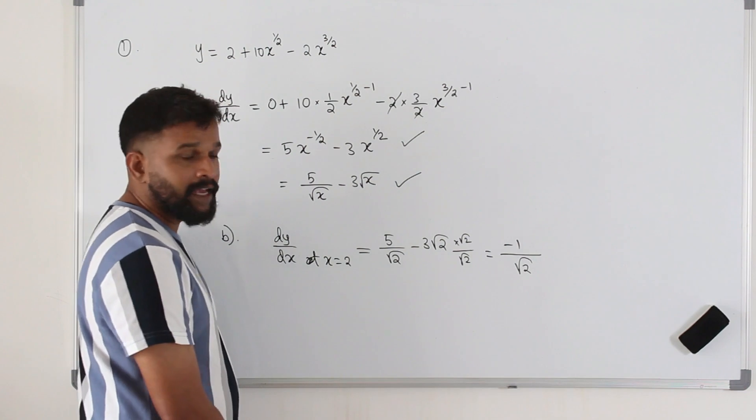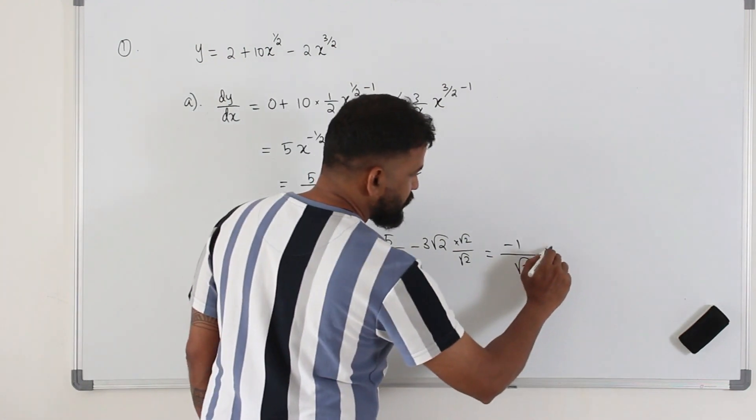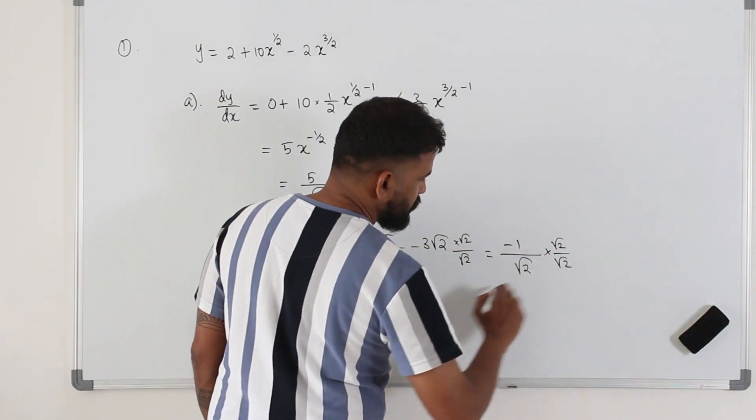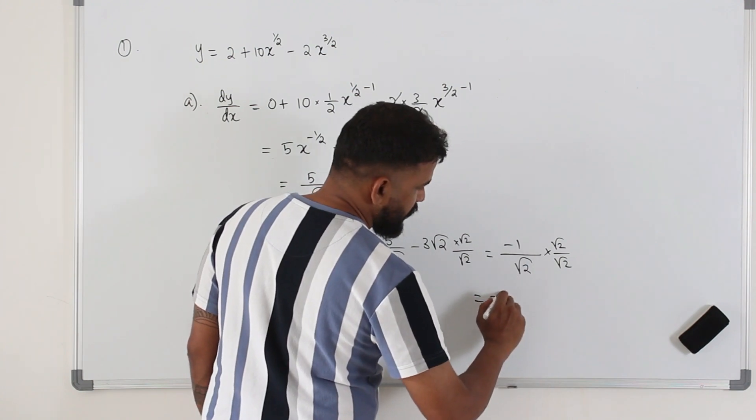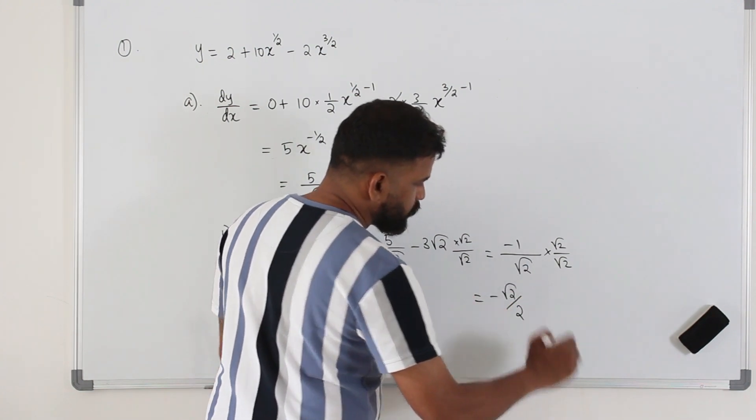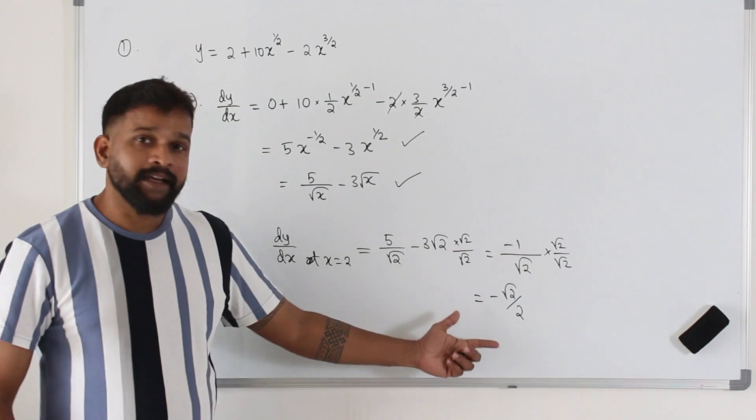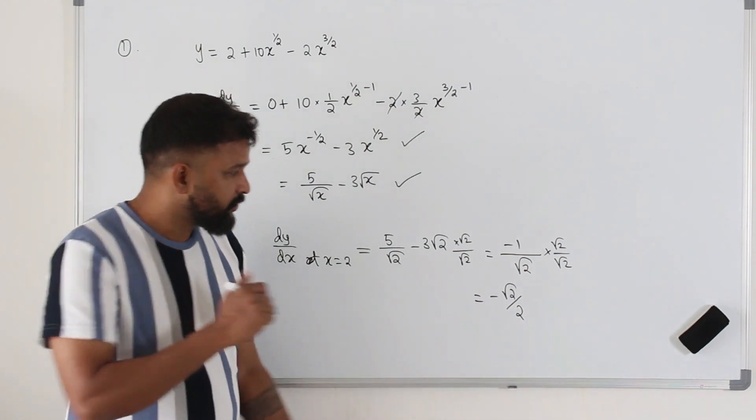5 minus 6 is negative 1. And then rationalize the denominator. So you will get negative root 2 over 2. That's the gradient of the tangent. That's the final answer.